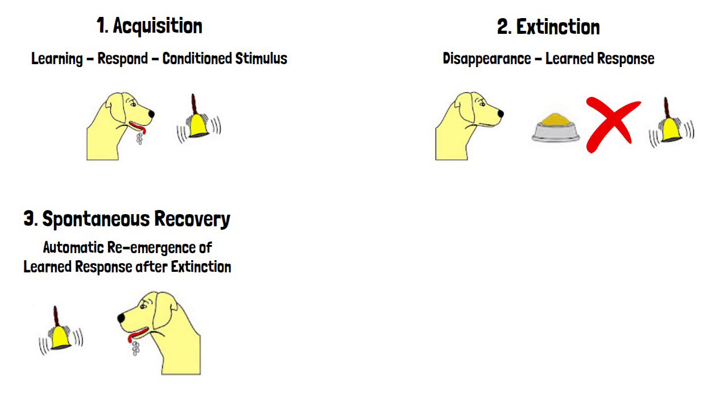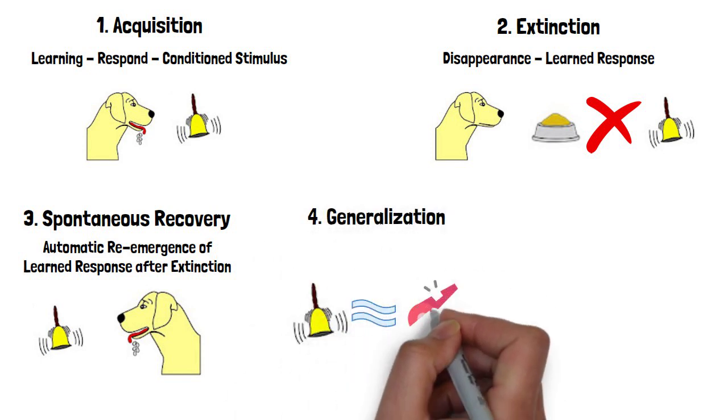4. Generalization, it is the tendency to get triggered by other stimulus that are similar to conditioned stimuli.